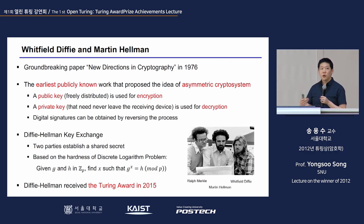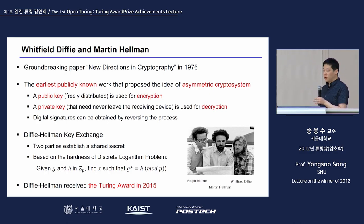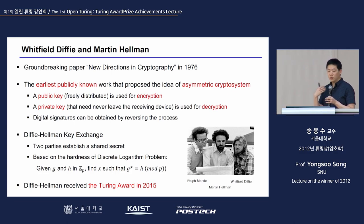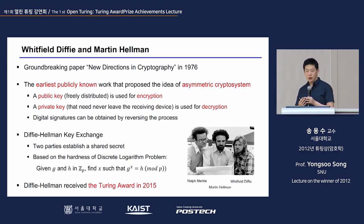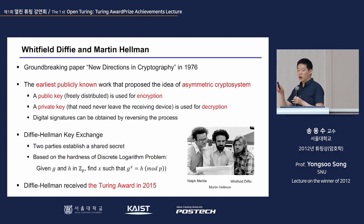This was the first time the idea of asymmetric cryptosystems was introduced. Some of the key concepts from this paper include the idea of a public key and a private key that can be divided. A public key is freely distributed and used for encryption, while the receiving party has a private key that never needs to leave the receiving device — it is used for decryption.